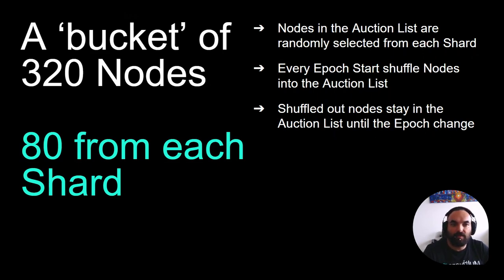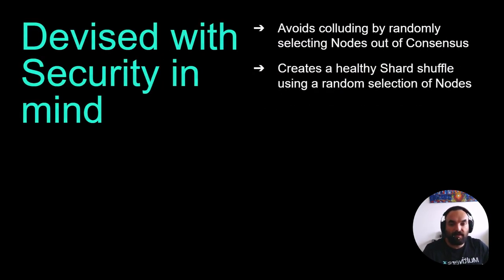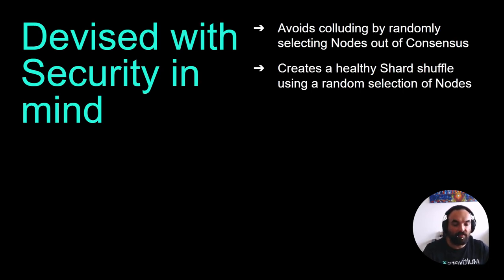Let's spend a bit more time on what the auction list actually is. One of our core developers explained it in a very easy way: the auction list is basically a bucket of 320 nodes — 80 nodes from each shard, randomly selected every epoch start, and these nodes remain in the auction list for one epoch. The auction list was devised with security in mind. Nodes are shuffled out from shards randomly each epoch, ensuring no colluding and giving all staking providers a fair chance at validating, resulting in a healthy shuffle of shards and nodes.